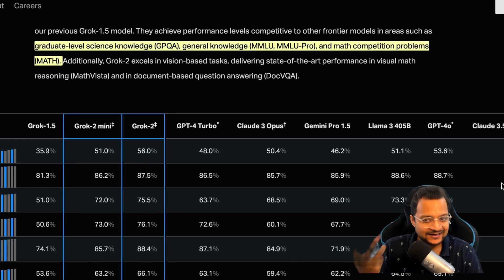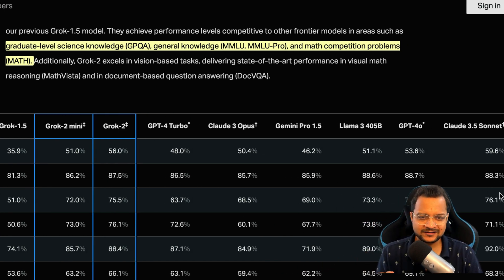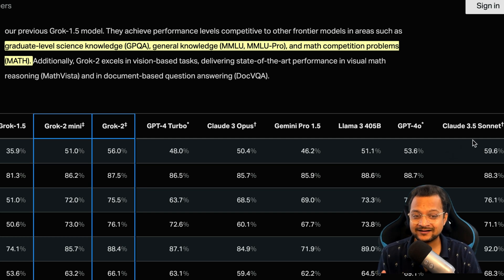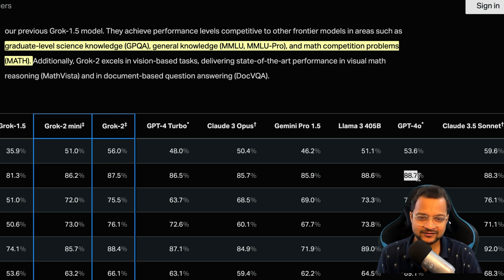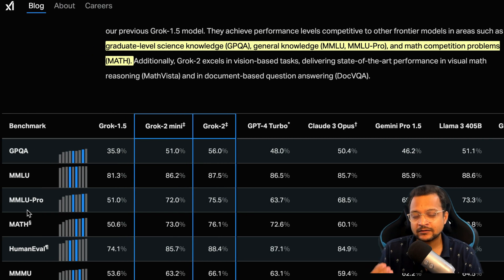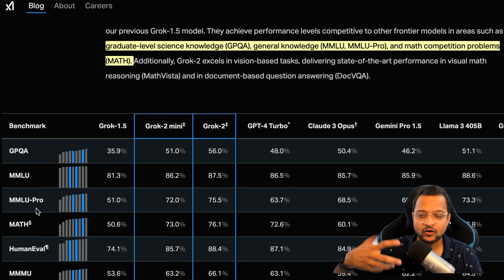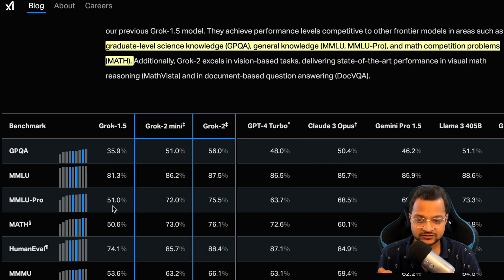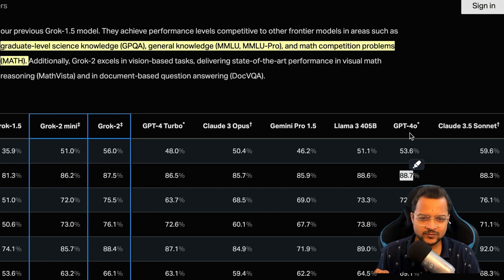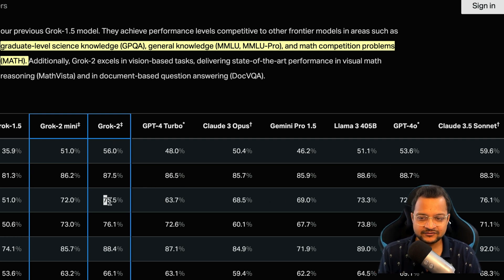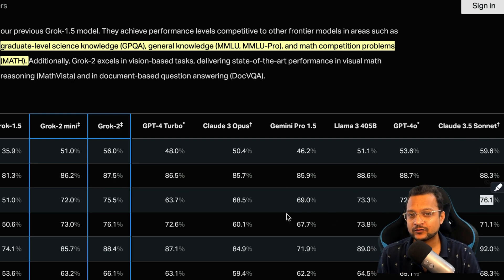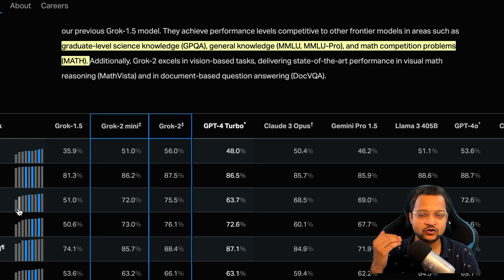Talking about MMLU — multimodal language understanding — Grok 2 scores 87.5, which is a little behind GPT-4o at 88.7 and Claude Sonnet at 88.3. However, on MMLU Pro, the more complex version, GPT-4o scores 72.6 while Grok 2 scores 75.5, very close to Claude's 76.1, showing it's really strong on complex tasks.